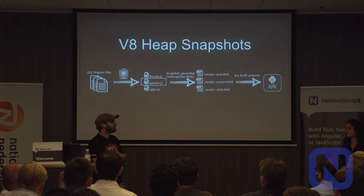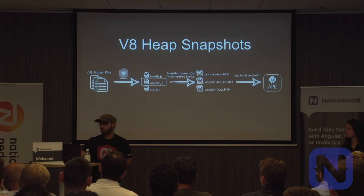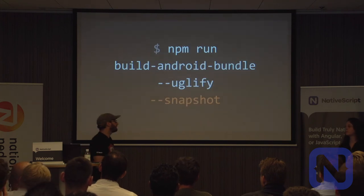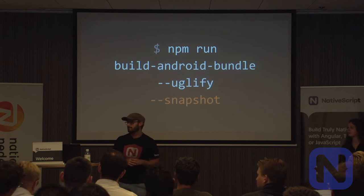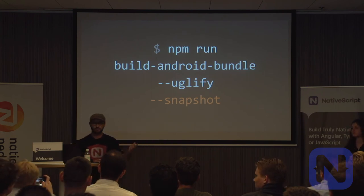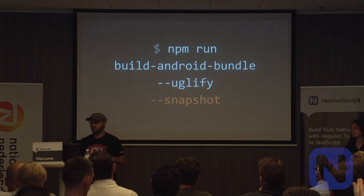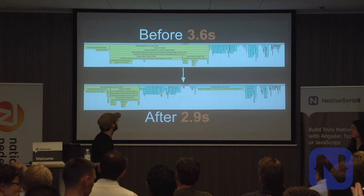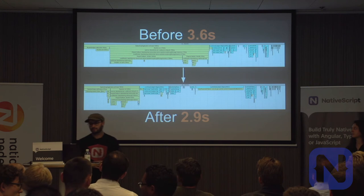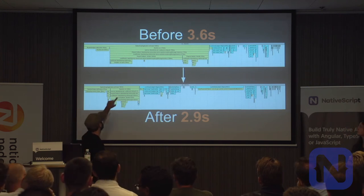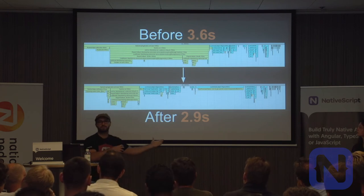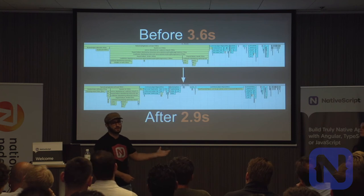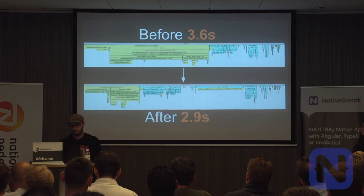Luckily, there's an easy workaround for this limitation: just wrap the native calls inside a function that gets executed when your application is actually running, not in the snapshot script. To enable snapshots, it's really easy because we pre-configured the Webpack config with our plugin. All we need to do is pass the '--snapshot' argument to the build script and instantly gain half a second or more in application startup time. The loading of the vendor chunk disappears from the flame chart because it's loaded as a heap snapshot instead of V8 having to parse and compile the file at runtime.